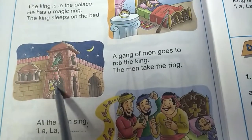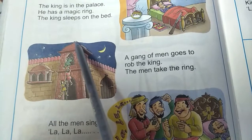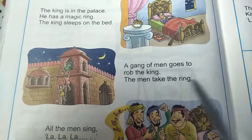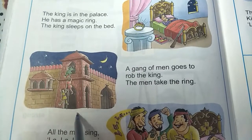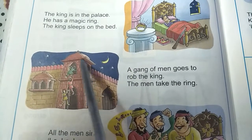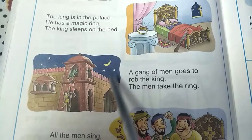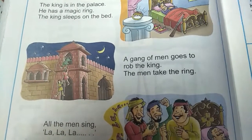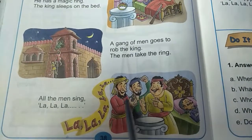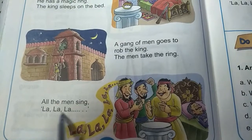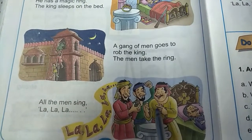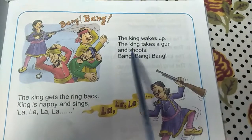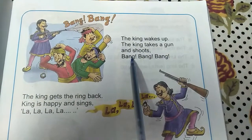Now we will move on to the next paragraph. You can see here some people are climbing. The gang of men goes to rob the king. The men take the ring. All the men sing la la la la. Now you can see here, the king wakes up. The king takes a gun and shoots — bang bang bang.